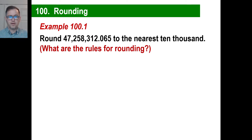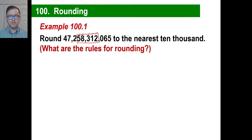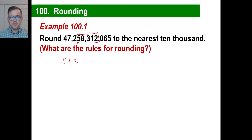To the nearest 10,000 — we need to find that place first. We have 1s, 10s, 100s, 1,000s, and then 10,000s. So this number, 58,320-something, the nearest 10,000 would be 60,000. Everything to the left stays the same, and everything including this place and to the right becomes zero. So that gives us 260,000. Boom, there you go.